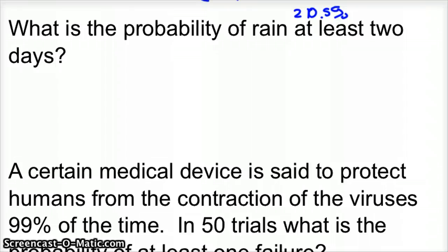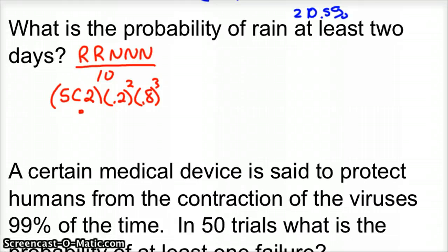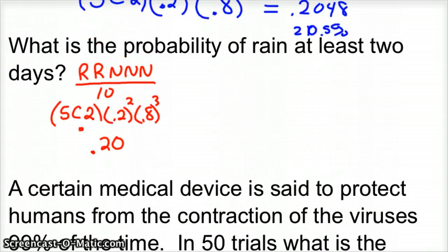So what's the probability of rain at least two days? We've got a couple of situations to look at. We could have two days of rain — we already figured out there are ten of those arrangements and the probability is five-choose-two times 0.2 squared times 0.8 cubed, which gives 0.2048.